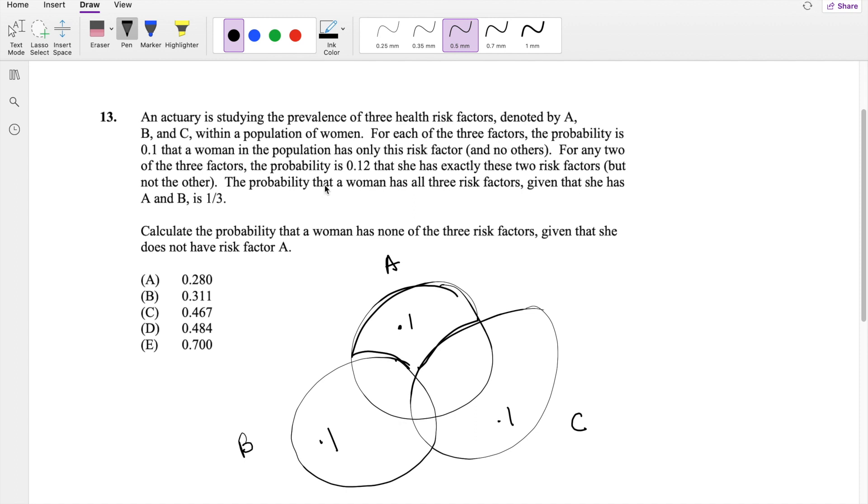And for any two of the three factors, the probability is 0.12 that she has exactly these two factors but not the other. So just A and B would be this part right here, 0.12, and likewise it's going to be 0.12 for here and here.